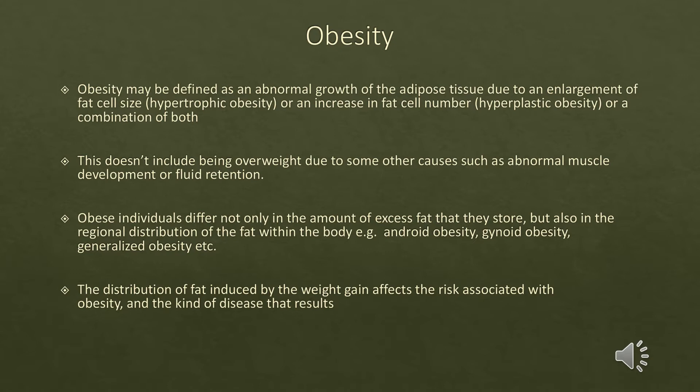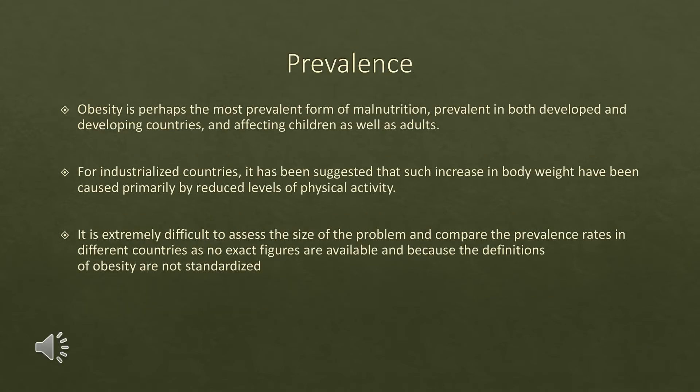There is also generalized obesity, in which fat accumulation is distributed throughout the whole body. The distribution of fat in obese people is responsible for different levels of risk associated with other diseases. For example, the risk of hypertension associated with generalized obesity may be less than the risk associated with central obesity.